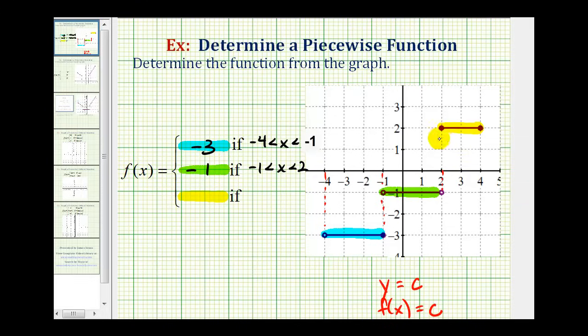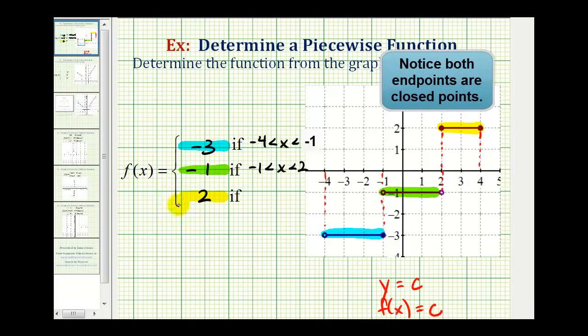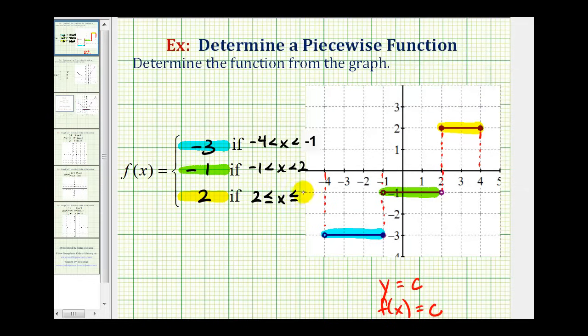And then for the last piece, the yellow piece, notice how this would be the function y equals two, or f of x equals two. So there's our function rule, and this is a rule only on the interval from positive two to positive four. But in this case, we do include both endpoints. So the interval or domain for this piece would be x is greater than or equal to positive two, and less than or equal to positive four.